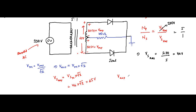The maximum value of the voltage which appears across the diode in a center tap type full wave rectifier is equal to V_secondary(max) divided by 2, because of the center tap connection. That equals 65 volts divided by 2, which is equal to 32.5 volts.